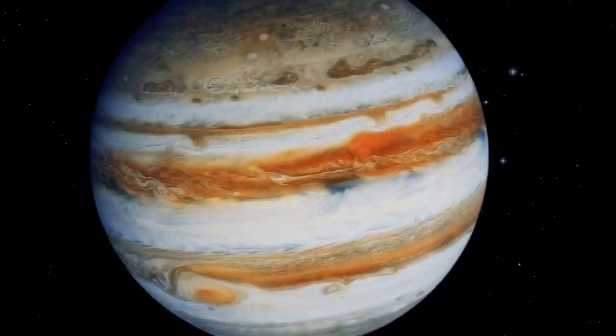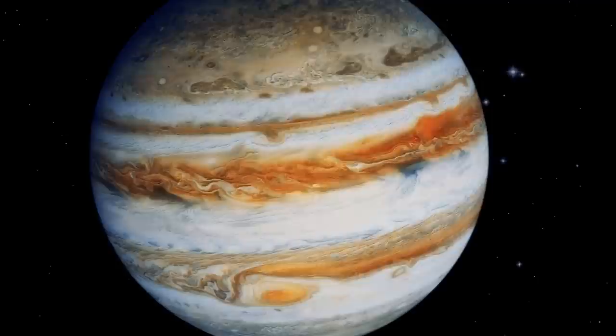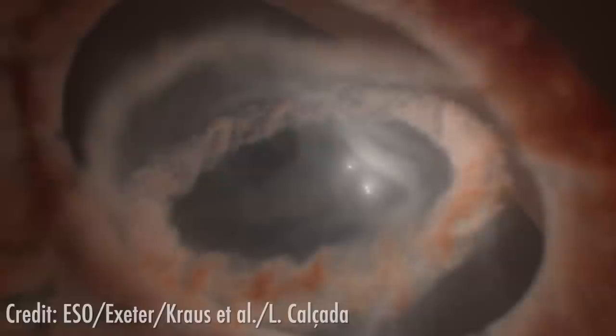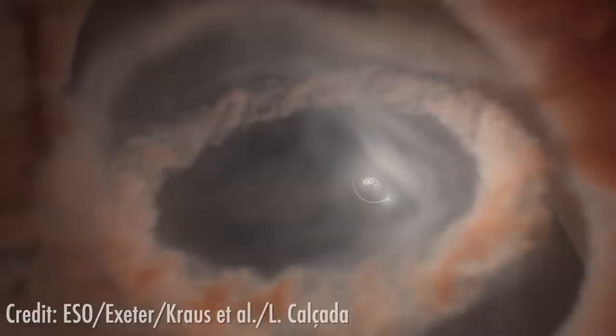And we've been able to tell through the work of Boyajian, who's been following it up over the last few years, that many of these dips appear chromatic, which is to say, when you look in blue light and red light, they have different depths. And so if it was a solid shell of material, you know, physical, completely opaque structure, then blue light shouldn't get through any more than red light.